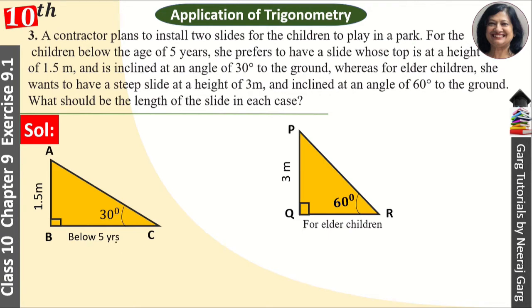So first of all, let's do below 5 years. Look, the angle of 30 degrees is given. What is perpendicular? The height given is perpendicular. So this is our perpendicular. What is 90 degrees? What is hypotenuse? So this is hypotenuse. And we will find hypotenuse.